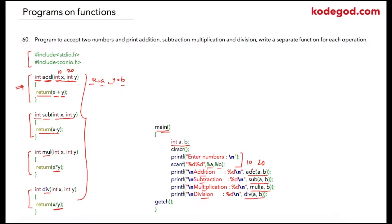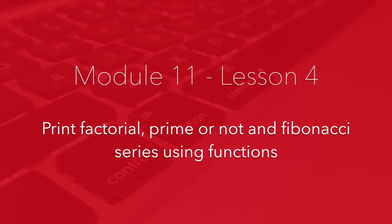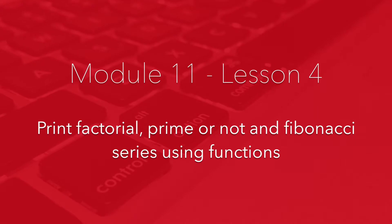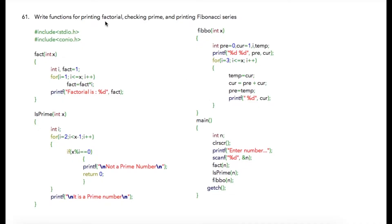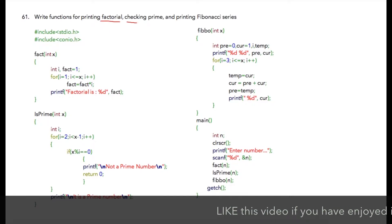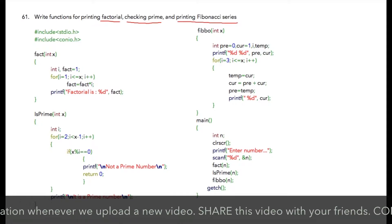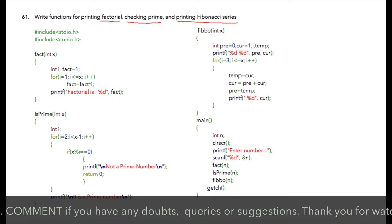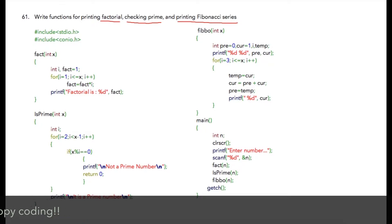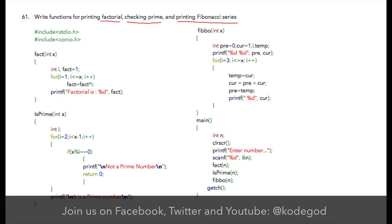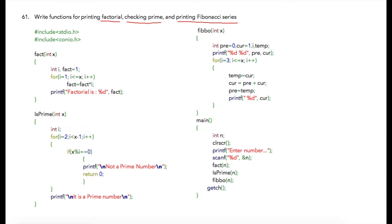In the next program we are going to take a number from the user and print the factorial of that number, check whether the number is prime or not, and print the Fibonacci series up to the user's given number. Since programs for factorial, checking prime, and Fibonacci series we have already seen in detail, in this program we will not explain the logic — we will concentrate our learning on functions.